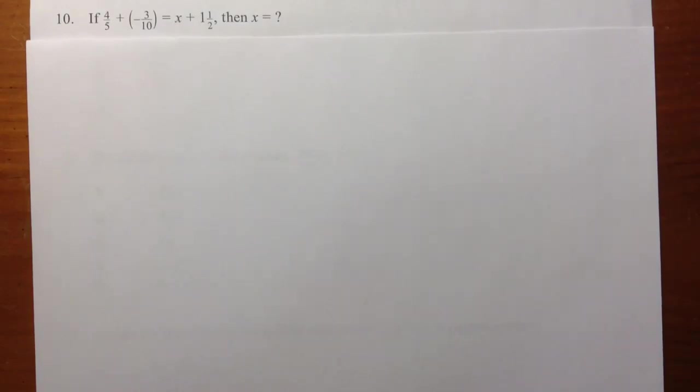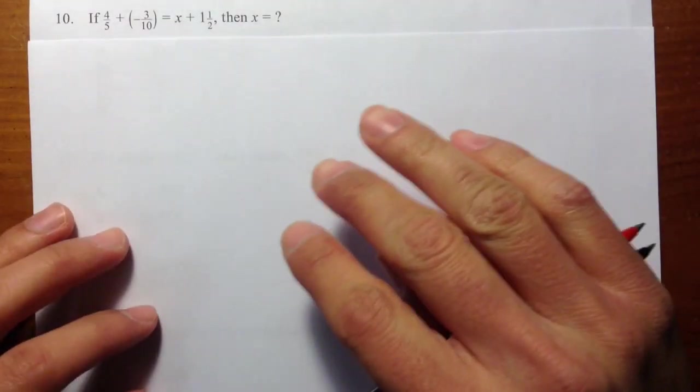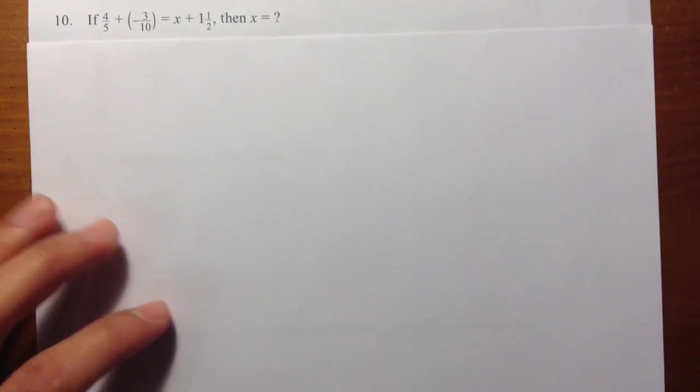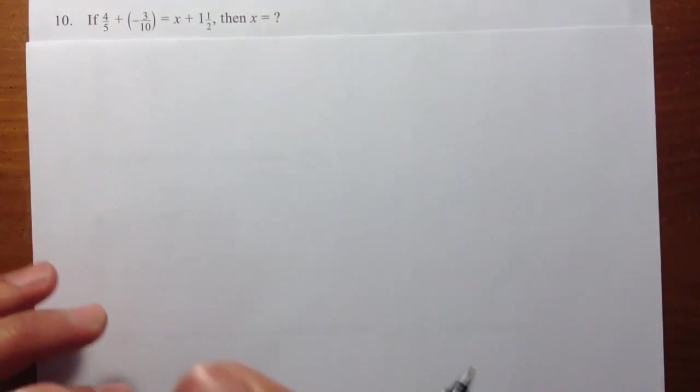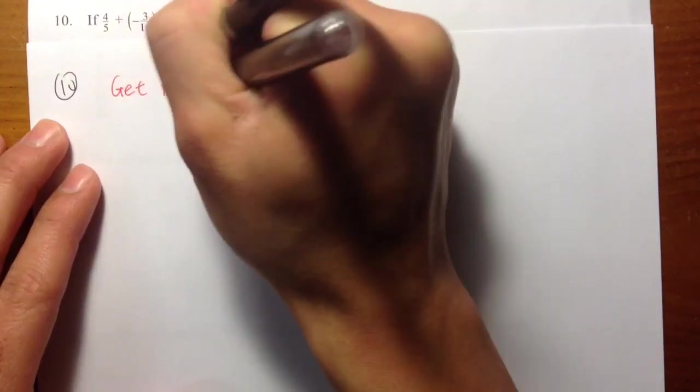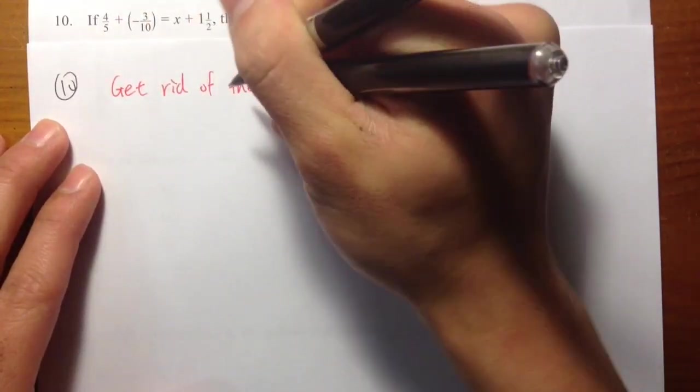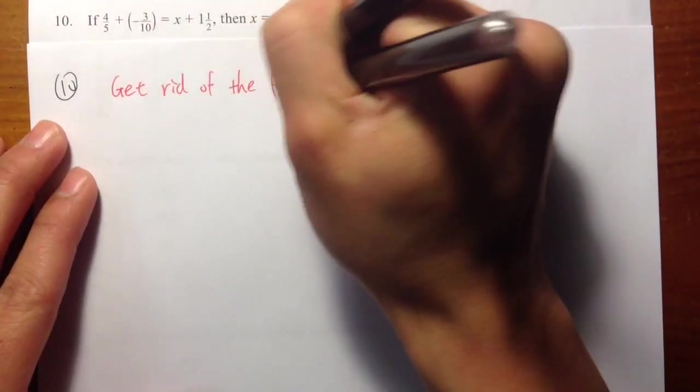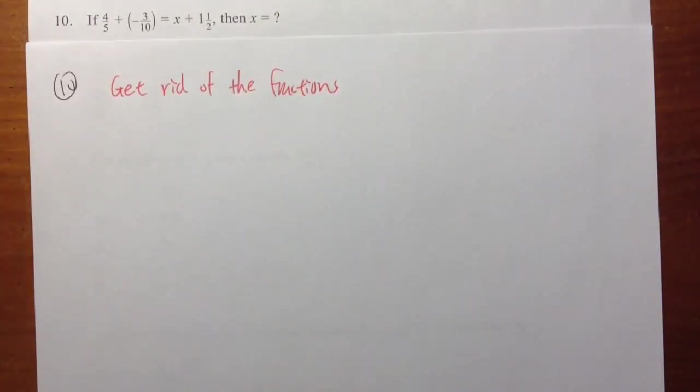So, number 10, the third way. With the decimals, we work with the fractions, and this is how we are going to do it for the third way. And I will call this get rid of the fraction, get rid of the fraction, or you can think about the denominators. Alright, so get rid of the fraction, and I will show you how.